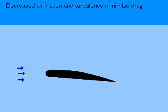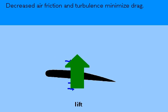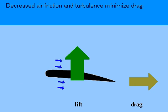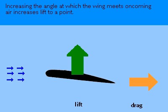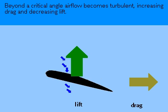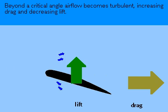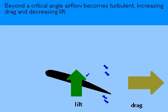By decreasing air friction and turbulence with smooth design, drag is minimized, making an aircraft more airworthy. The angle of the wings affects lift. Increasing the angle at which the wing meets the air can increase lift to a point, but beyond a critical angle, airflow will become turbulent, increasing drag and decreasing lift.